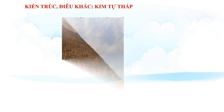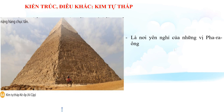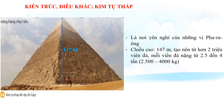Chúng ta cùng tham quan một trong những công trình kiến trúc vĩ đại nhất của người Ai Cập cổ đại - đó chính là Kim Tự Tháp. Đây là hình ảnh Kim Tự Tháp Kheops ở Ai Cập. Kim Tự Tháp được xây dựng làm nơi an nghỉ của những vị Pharaoh vĩ đại, đồng thời là nơi chứa những xác ướp hàng nghìn năm tuổi của những người quyền quý và các vị vua Pharaoh. Kim Tự Tháp Kheops có chiều cao lên đến 147m, tạo nên từ hơn 2 triệu viên đá, mỗi viên trung bình nặng từ 2,5 đến 4 tấn. Kim Tự Tháp là một trong 7 kỳ quan của thế giới thời kỳ cổ đại.